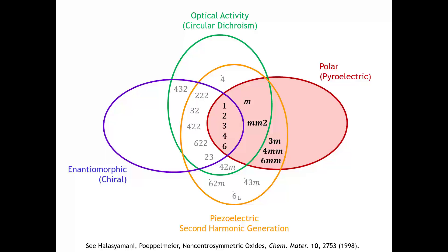Coming back to our Venn diagram, we can rule out all space groups with multiple rotation axes — 222, 32, 422, 622, and so on — as well as point groups with roto-inversion axes like 4-bar and 6-bar. We're left with just 11 point groups: those that have only a proper rotation axis, and those with mirrors parallel to that rotation axis.